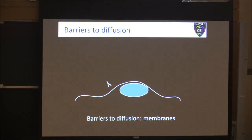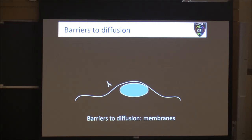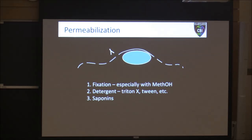Back to the actual science: barriers to diffusion. Immunostaining is essentially a diffusion process. We need these antibodies to somehow get into our cells or tissue and find their target of interest. The first barrier is the plasma membrane — obviously an antibody can't get through a standard plasma membrane. This is why if you're doing live cell imaging you can't just pour some antibody in there to label something intracellular. This membrane presents a very strong barrier.